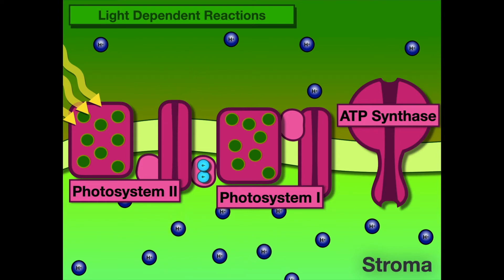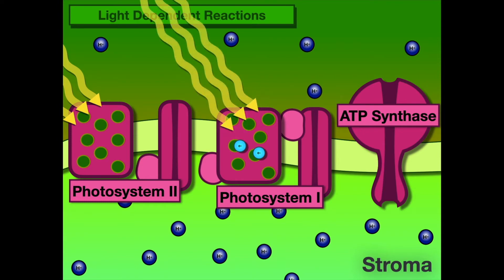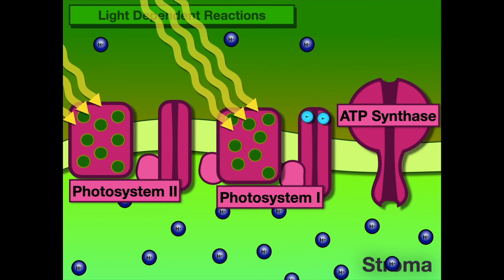As those electrons move down the electron transport chain, they provide energy to pump hydrogen ions against the concentration gradient, creating a concentration gradient. They then move into Photosystem I, where they are excited again — recharging those electrons. Once recharged, they again move down the electron transport chain, providing energy to move hydrogen ions across into the stromal space. Once we have a sufficient gradient, ATP synthase has the necessary power to function, and as it spins it creates ATP, just like in the electron transport chain in cellular respiration.